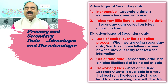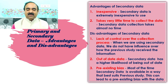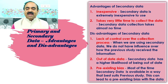Disadvantages of secondary data. One, lack of control over the collection process: when we are using secondary data, we do not have influence over how the previous study received the information. Two, out-of-date data: secondary data has a higher likelihood of being out-of-date. Three, pre-existing bias: most of the time, secondary data is available in a way that best suits a previous study, which can lead to a pre-existing bias with the data.